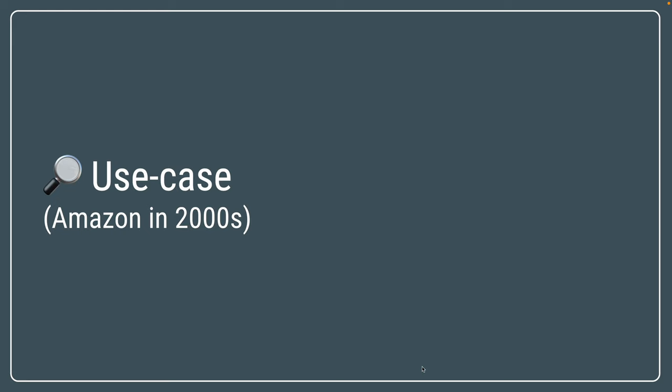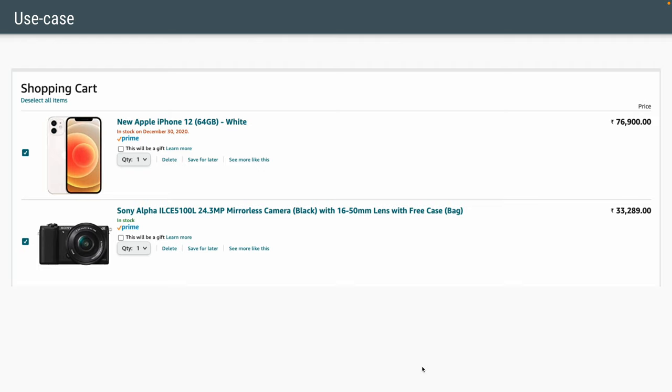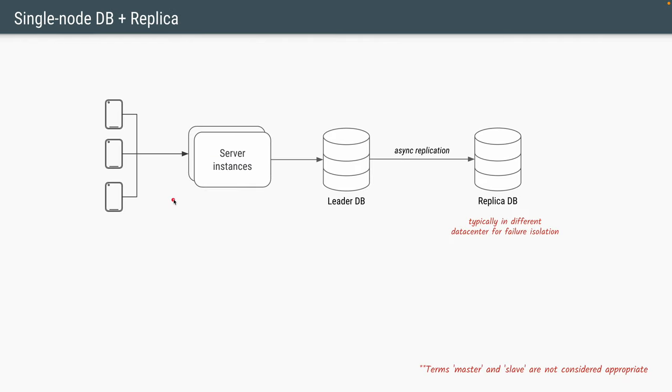Let's say we're building an Amazon-like e-commerce website in the early 2000s. This way, we will understand what problems were faced during that time because of which NoSQL databases had to be created. Let's focus only on one functionality of the website: the shopping cart. We will build this using a very straightforward 3-tier architecture — there'll be a UI, which talks to your application instances in the backend, also called server instances, and the data is stored in a SQL database.